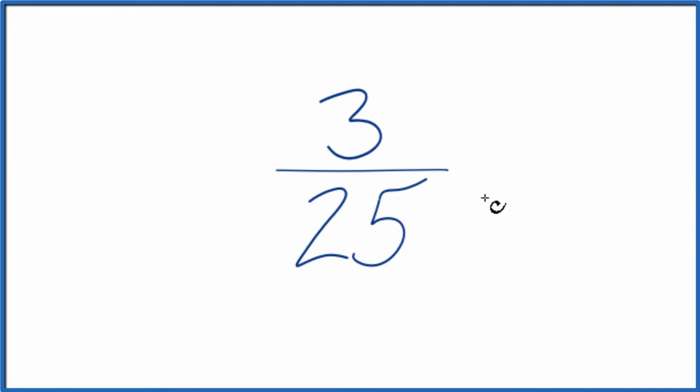The only common factor for 3 and 25 is 1, and that means this is already simplified. So 3/25 is in lowest terms, it's been simplified already, so you don't have to do anything.